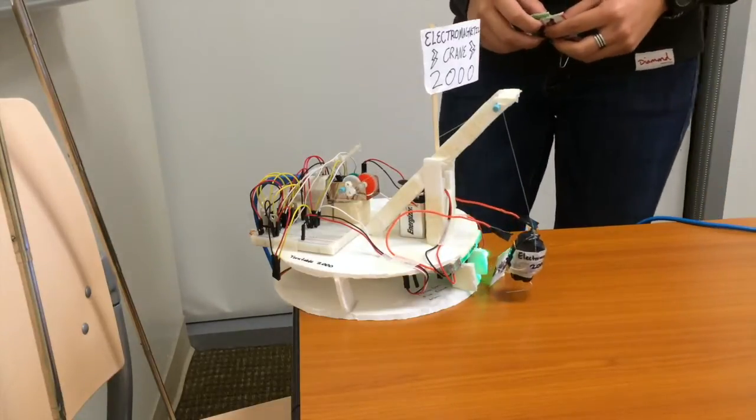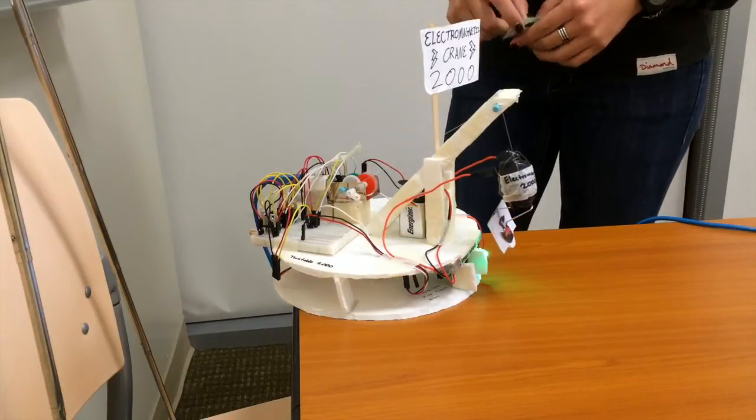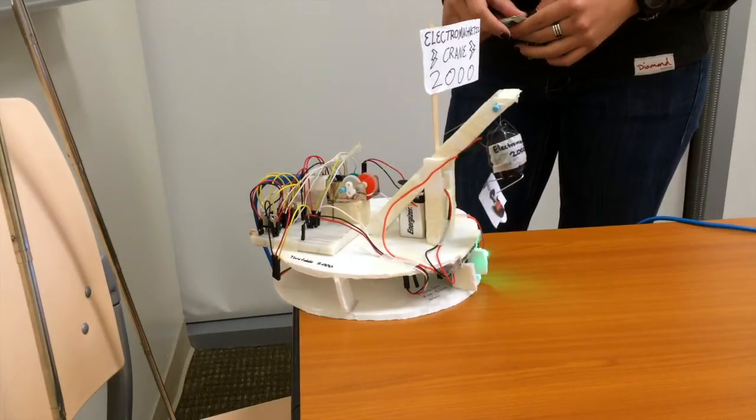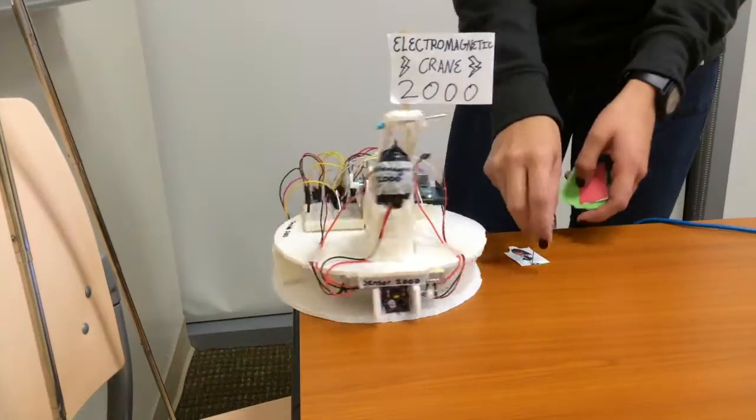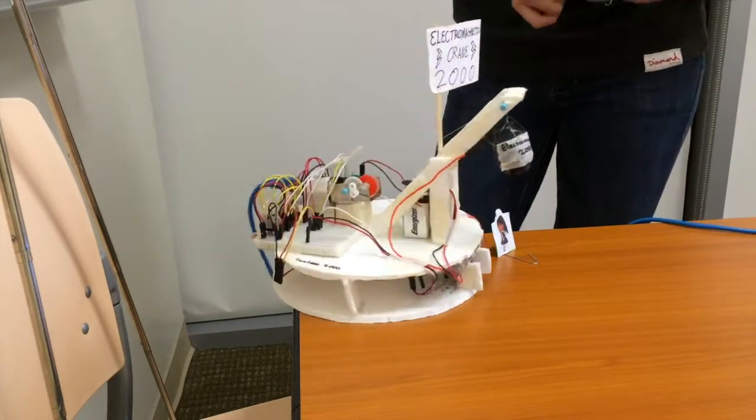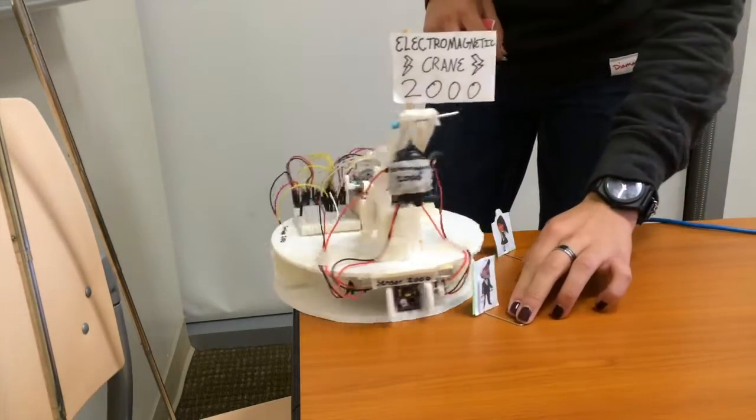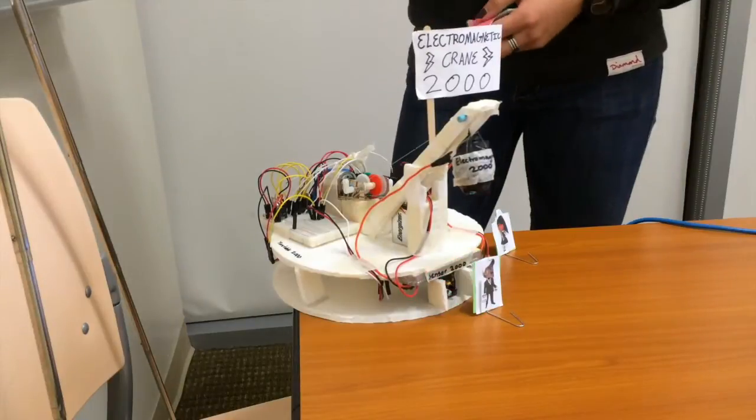If it senses green, it turns to the right. Turn off the electromagnet once it's in its designated area. We'll repeat the process for all the little people.